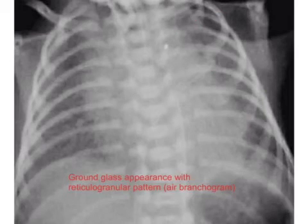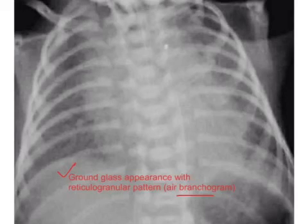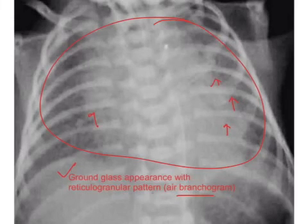Another radiological finding is ground glass appearance with a reticulogranular pattern, or air bronchogram, seen in infant respiratory distress syndrome. This is because the majority of the alveoli collapse, and the dying alveolar cells accumulate within the collapsed alveoli, giving rise to hyaline membrane formation. That is why IRDS is also referred to as hyaline membrane disease. You can see the ground glass appearance and reticulogranular pattern, which is the air bronchogram.